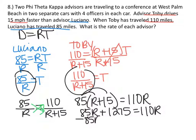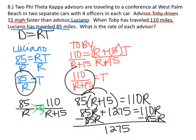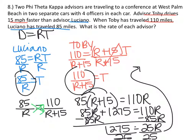Subtract 85R on both sides of the equation. So we have 1275 equals 25R. Then divide both sides by 25. Running out of space, so moving up. R equals 51.